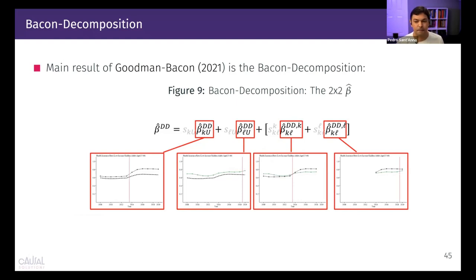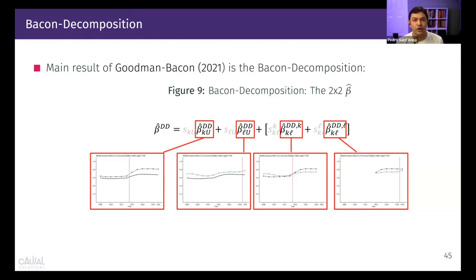Question: do you always need at least one unit that remains untreated for the whole window? To clarify — if at any given time one group is untreated but it's not always the same group, is that a problem? For a given window of interest, you always need a group that remains untreated in that window. It doesn't have to be the same group across all windows, but you must have untreated units in every time period. If there's a window where everybody is treated, you cannot apply DiD there and must trim that data out.